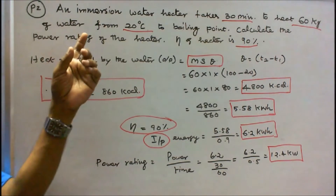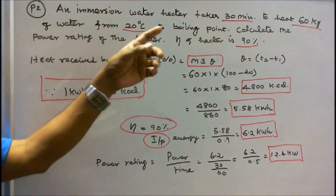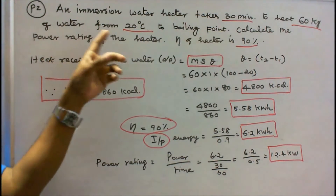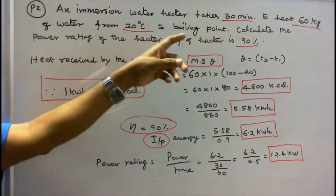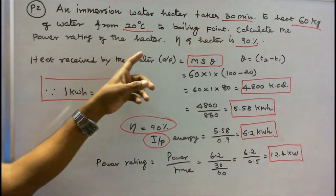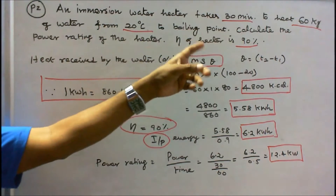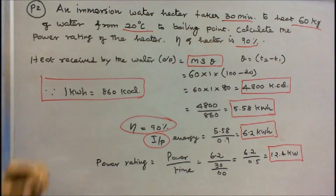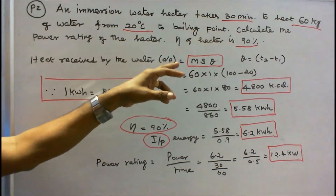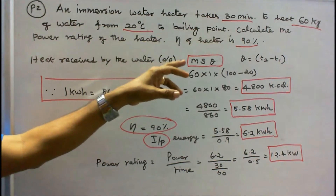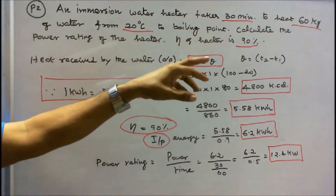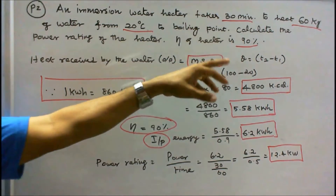Problem 2: An immersion water heater takes 30 minutes to heat 60 kg of water from 20 degrees centigrade to boiling point. Calculate the power rating of the heater, given that the efficiency is 90%. Heat received by the water (output) = M × S × θ, where M is mass in kg, S is specific heat capacity, and θ is T2 minus T1.